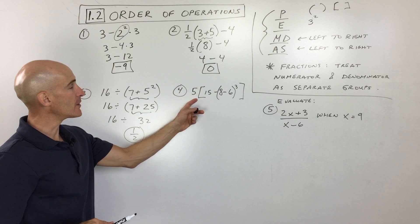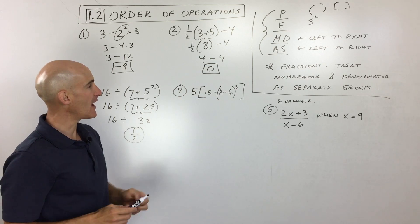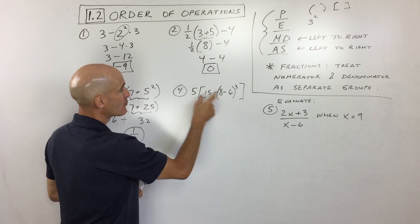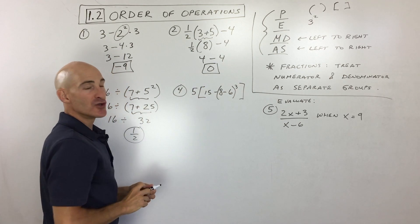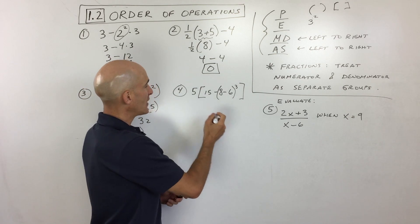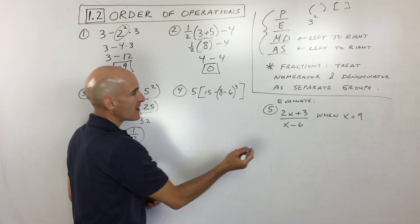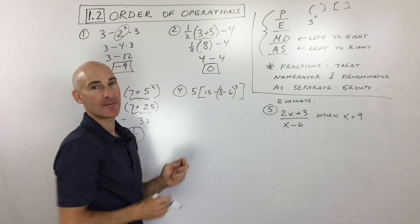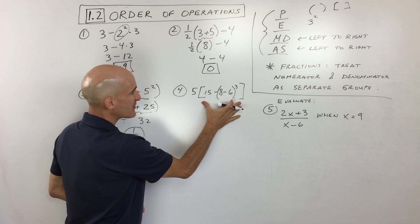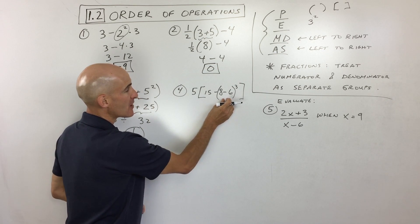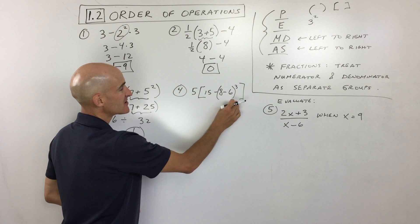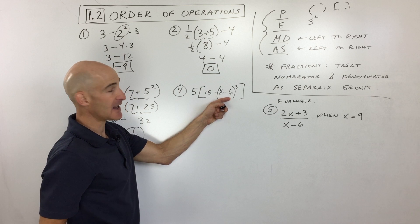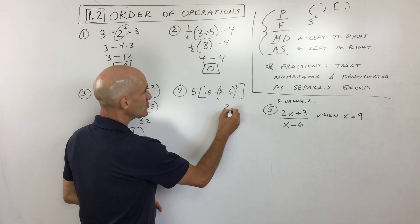Let's go to example four. Here we have a set of brackets and a set of parentheses. With brackets, these square brackets, you alternate. You work from the inside out. You work with the innermost parentheses first, because within the parentheses we do the order of importance. So 8-6=2.